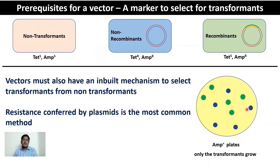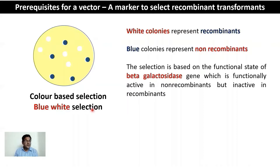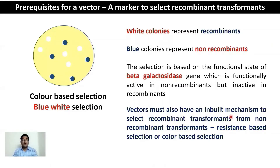Now that you have a population of recombinant and non-recombinant transformants, there must also be a mechanism inherent in the vector to identify which colonies are recombinants and which are non-recombinants. This is done by blue-white screening: among the transformants, white colonies represent your recombinants and blue colonies represent your non-recombinants. We'll cover the mechanism when discussing plasmids in detail, based on the functionality of the lacZ gene which codes for beta-galactosidase.